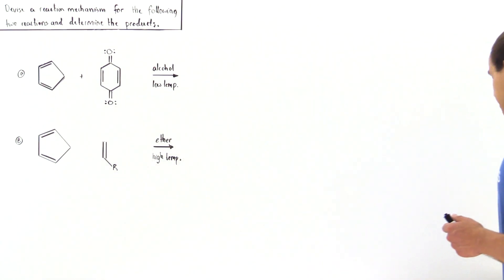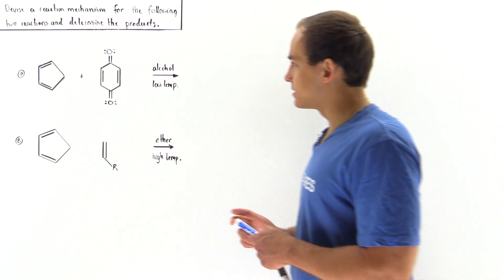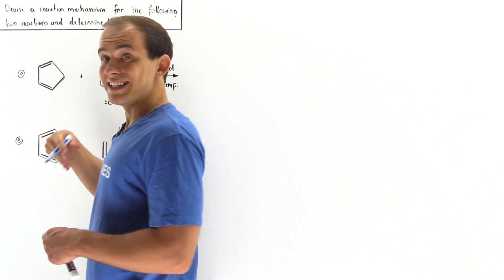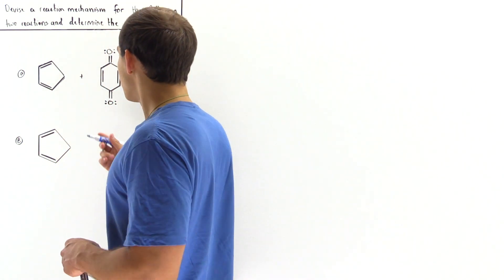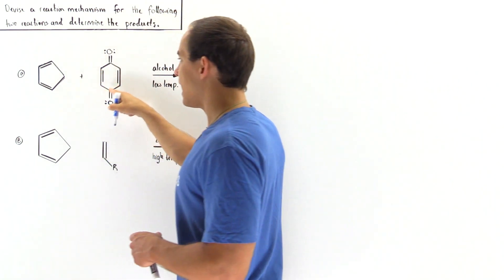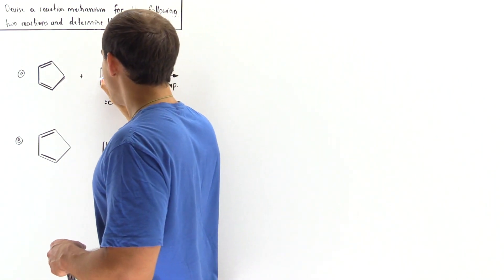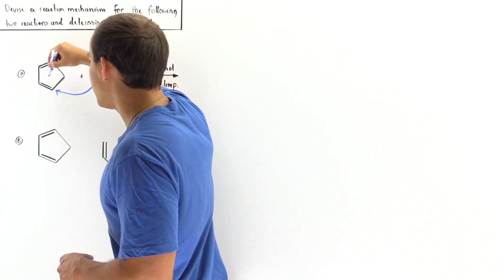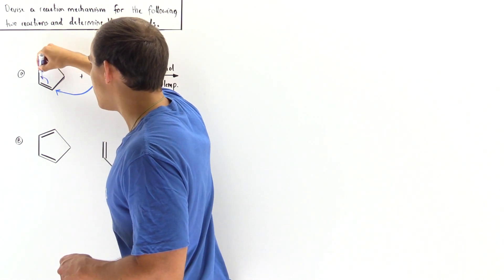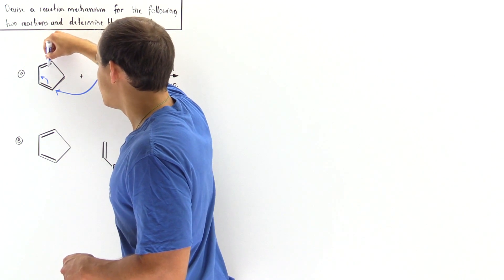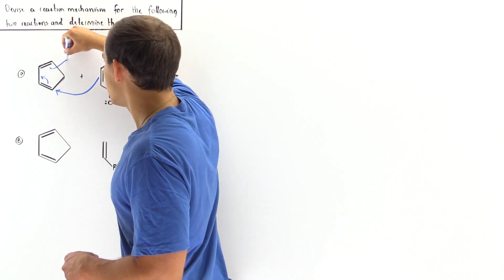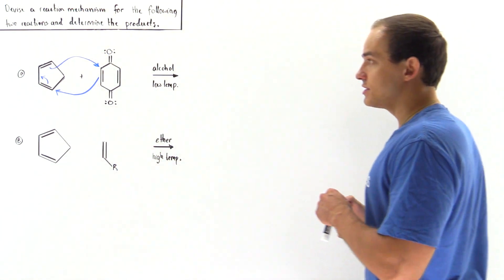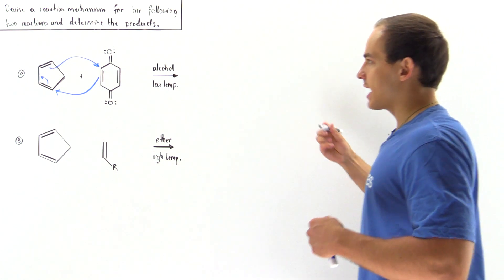Let's begin with determining our reaction mechanism. In the first step, which is a single concerted step, we have this pi bond on the alkene reacting with this carbon forming a single sigma bond. This displaces the pi bond and places it here, and this makes this pi bond go into this carbon and form another single bond. This is our Diels-Alder reaction.